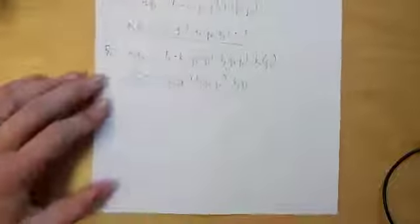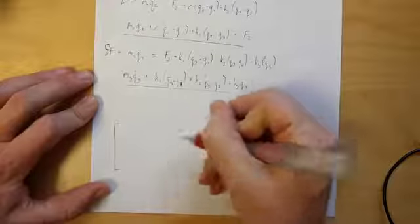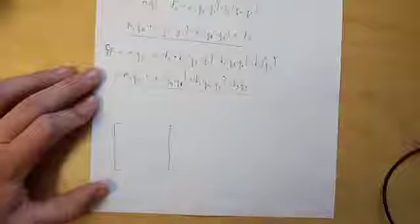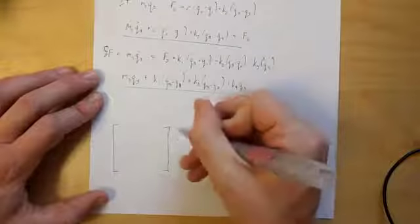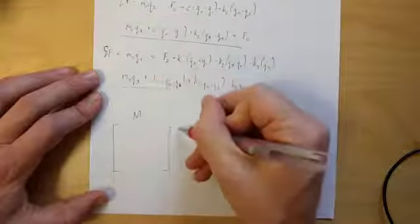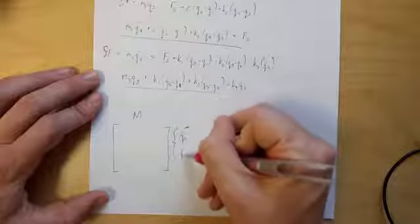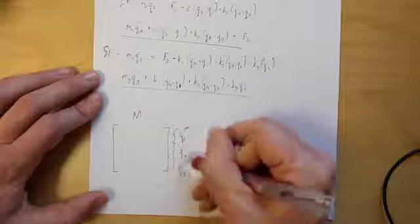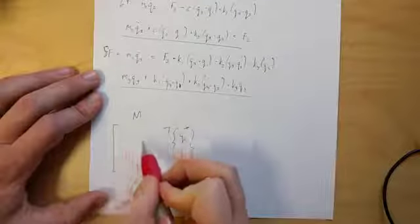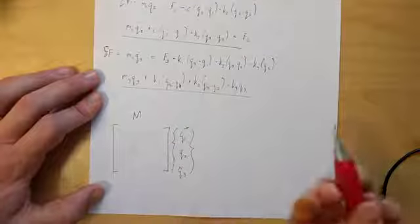Now, if you just want to cut to the end and write everything in matrix form, then we can do sort of a shortcut. So let's say we have our mass matrix, which is multiplied by all of our accelerations, all of our Q double dot terms, and we want to know what goes in the matrix entries.